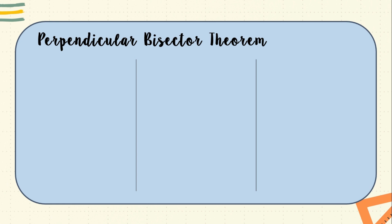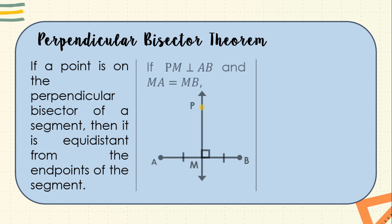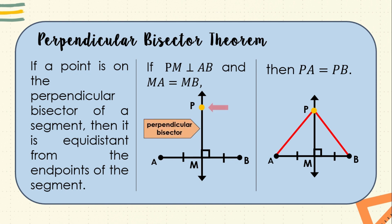The perpendicular bisector theorem states that if a point is on the perpendicular bisector of a segment, then it is equidistant from the endpoints of the segment. To illustrate: if PM is perpendicular to AB and MA equals MB, then PA equals PB. Point P is on the perpendicular bisector PM, so it has equal distance from each endpoint of segment AB — that is why PA equals PB.